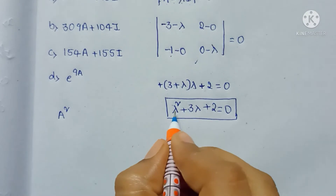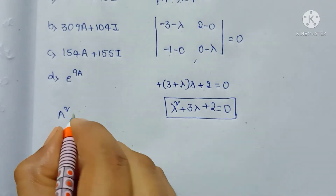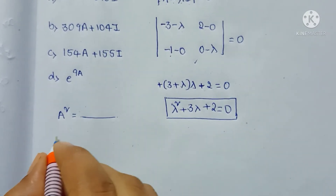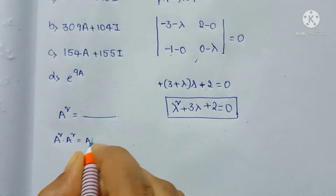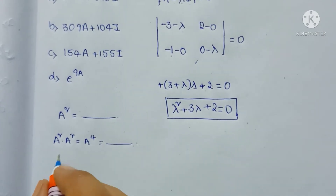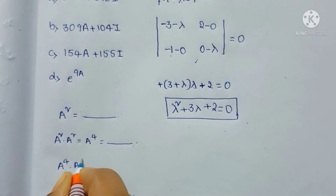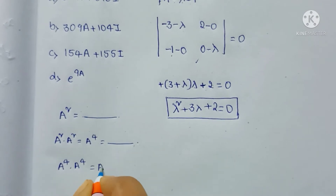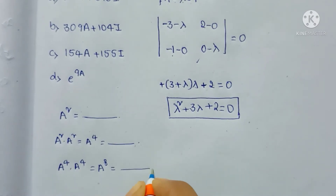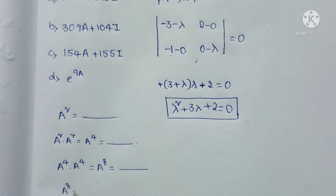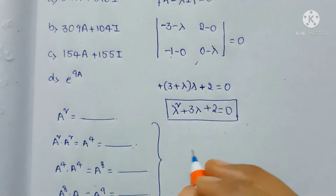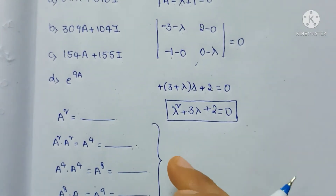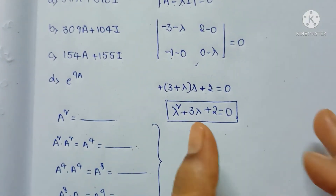We can write A squared in terms of A, then by multiplying A squared into A squared we get A power 4 in terms of A. Multiplying A power 4 into A power 4 gives A power 8, and multiplying A power 8 into A gives A power 9. However, this is a very lengthy process, so we use a shortcut method instead.